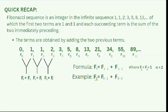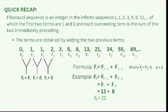So, try this example where you're to find F sub 8. Substitute n into the formula: F sub 8 minus 1 plus F sub 8 minus 2 is equal to F sub 7 plus F sub 6, which is 13 and 8. So, we're just gonna add these two values to find F sub 8, which is 21.